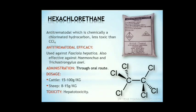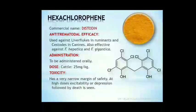Next, hexachloroethane. It is a simple chlorinated hydrocarbon. It is less toxic than carbon tetrachloride in cattle and is used against Fasciola. It is also effective against Haemonchus and Trichostrongylus eggs but has no activity against intestinal nematodes of ruminants. It is administered orally; dose is 15-100 g/kg in cattle and 8-15 g/kg in sheep. Hepatotoxicity may occur as a toxic sign.